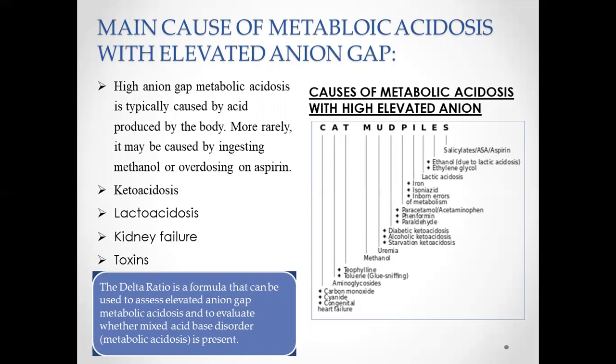The delta ratio formula can be used to assess elevated anion gap metabolic acidosis and to evaluate whether a mixed acid-base disorder is present or not. The whole causes of metabolic acidosis are summarized in the mnemonic CAT MUD PILES.